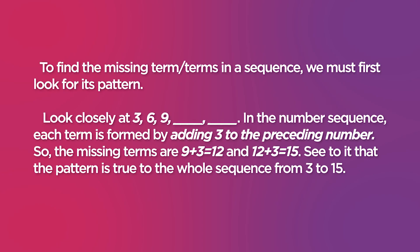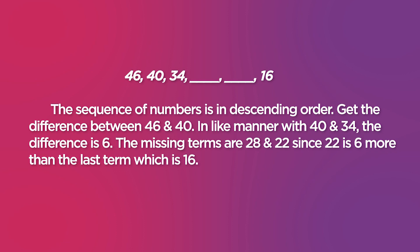To find the missing term or terms in a sequence, we must first look for its pattern. Look closely at 3, 6, 9. Each term is formed by adding 3 to the preceding number. So, the missing terms are 9 plus 3 equals 12, and 12 plus 3 equals 15. See to it that the pattern is true to the whole sequence from 3 to 15.